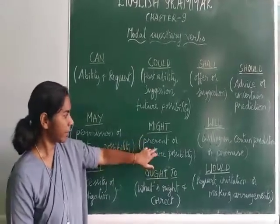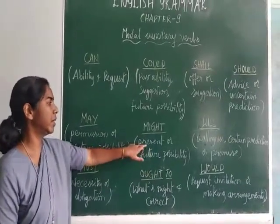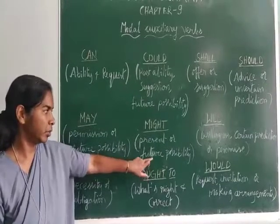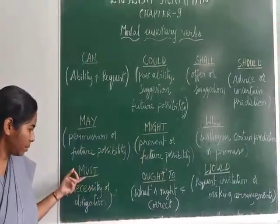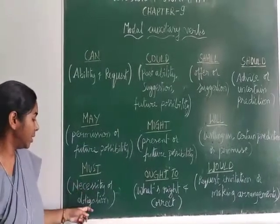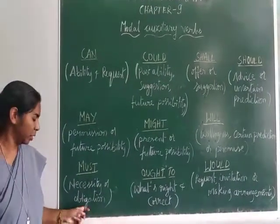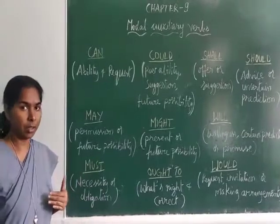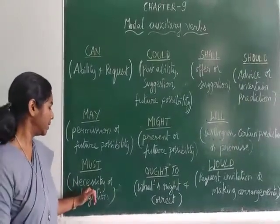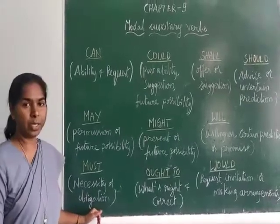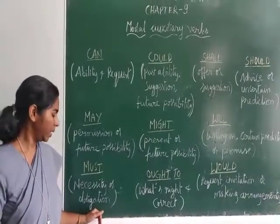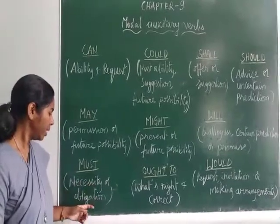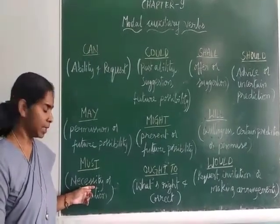The next one is 'might'. Might is used to express present or future possibility — both present and future possibility. Next is 'must'. Must expresses necessity or obligation — there is no excuse. It is a necessity and an obligation, especially for the first person. We have some obligations and duties that we cannot avoid, so must is used to express necessity and obligation.